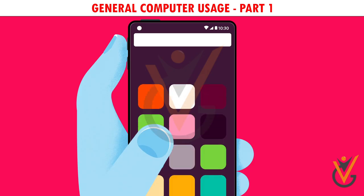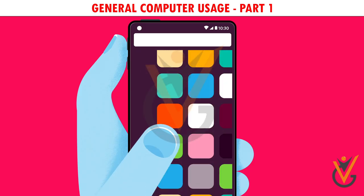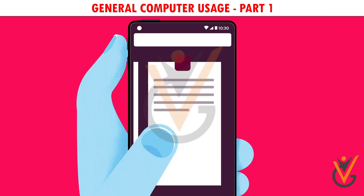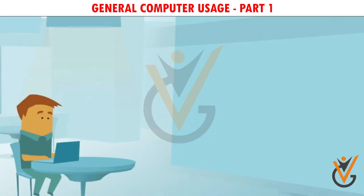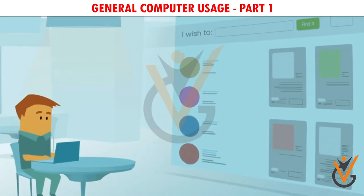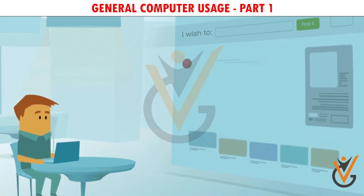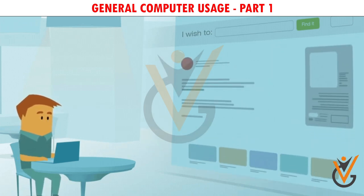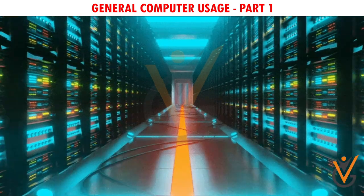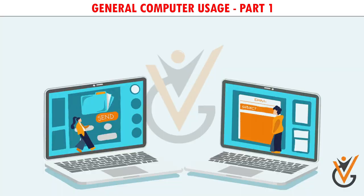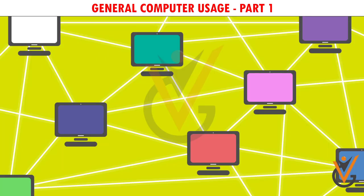Smartphones and other mobile devices mostly use the iOS or Android operating systems. TVs, game consoles, and even appliances like refrigerators can have built-in computers, although they may not do everything a desktop or laptop can. There is another type of computer that plays an important role in our lives — servers. A server sends information to other computers on a network. In fact, every time you use the internet, web servers deliver the web pages that you want to see to your computer.